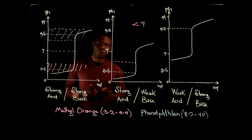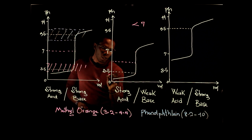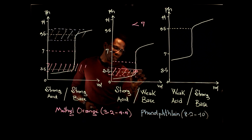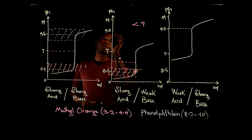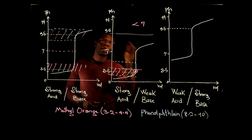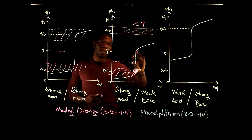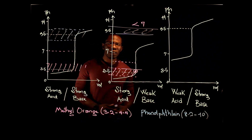How do we choose our indicators for this reaction? Looking at methyl orange again, it's active between 3.2 and 4.4 — 3.2 is somewhere here and 4.4 is somewhere here. Methyl orange is going to be active because it falls within the vertical line. But phenolphthalein, active between 8.2 and 10, wouldn't work in this case because that zone does not overlap with the vertical line. So methyl orange is a good choice of indicator, but phenolphthalein is not.